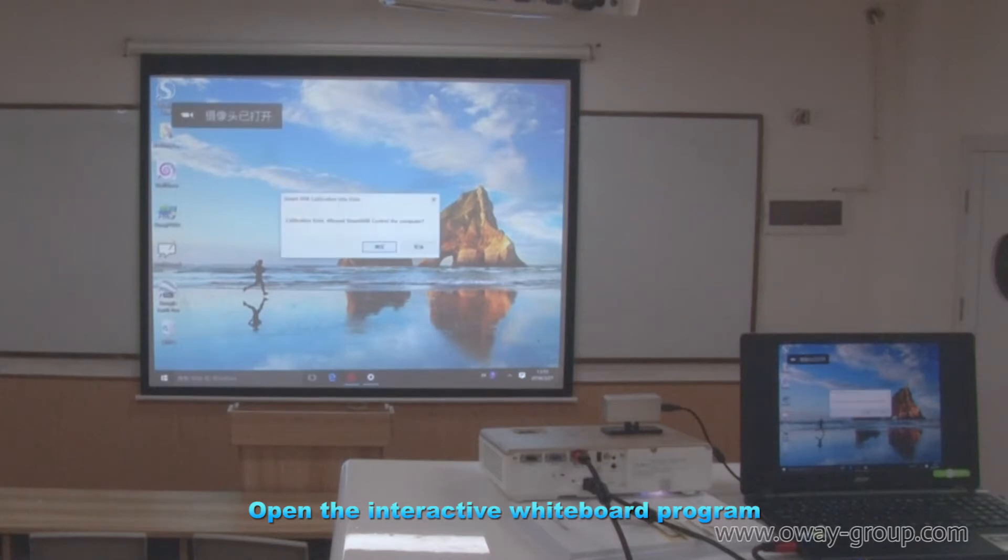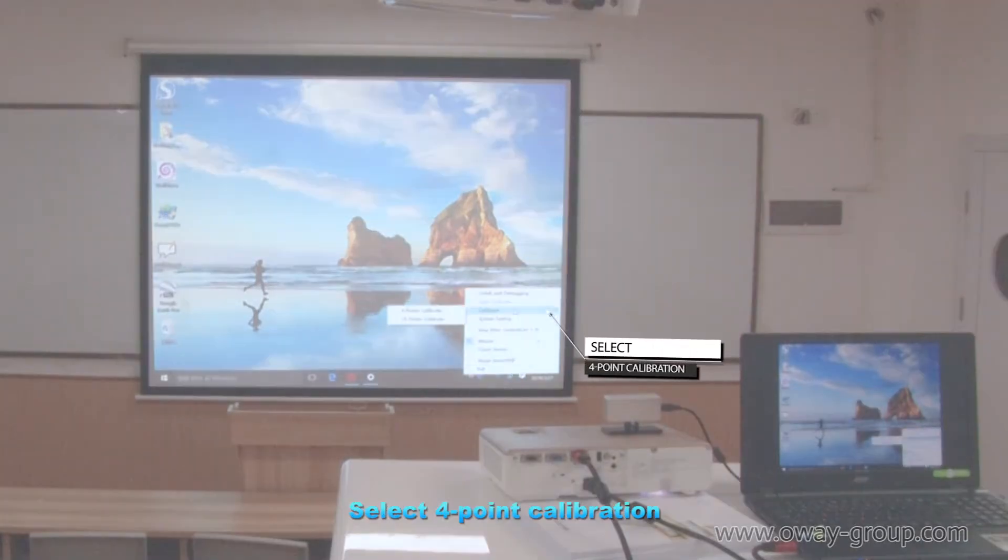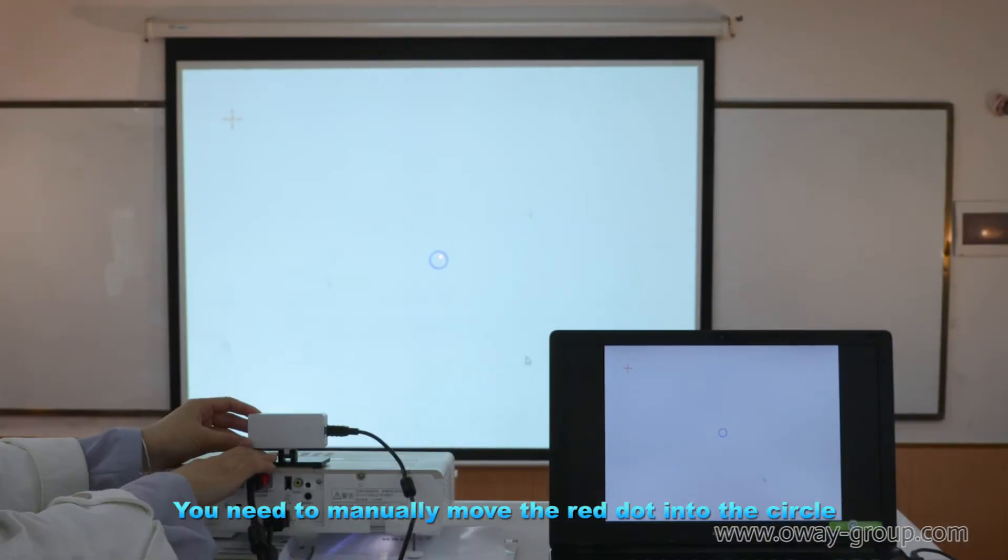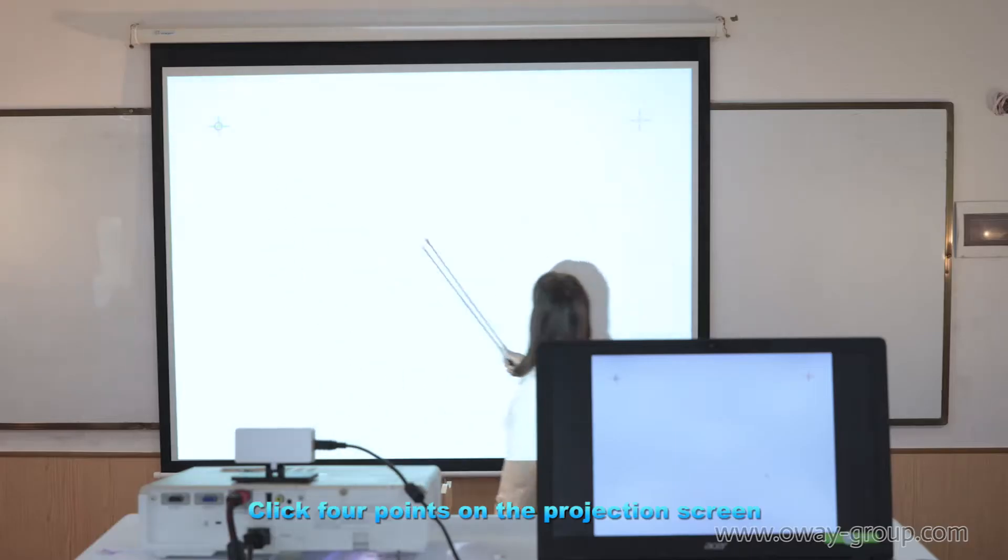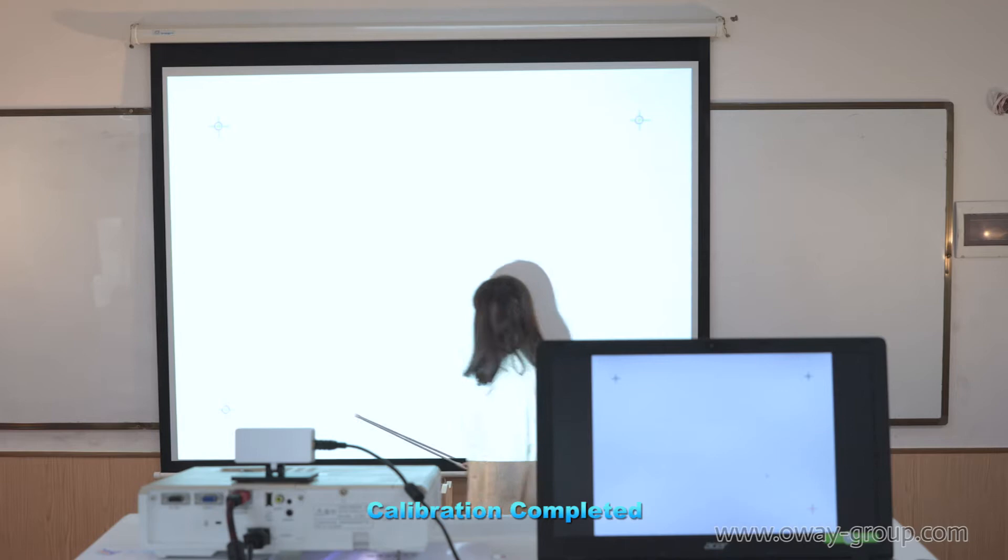Open the Interactive Whiteboard program. Select 4-point calibration. You need to manually move the red dot into the circle. Click 4-point on the projection screen. Calibration completed.